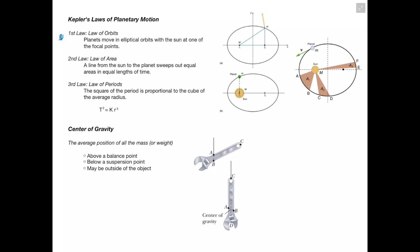Next let's talk about Kepler's laws of planetary motion. The first law, the law of orbit, states that planets move in elliptical orbits with the sun at one of the focal points. Basically, we imagine a pin at each of the two focal points, then place a pencil within a string around the pins. As we move the pencil around, it draws this elliptical orbit. What we realize is that an elliptical orbit always has two focal points, and the sun must be at one of them.